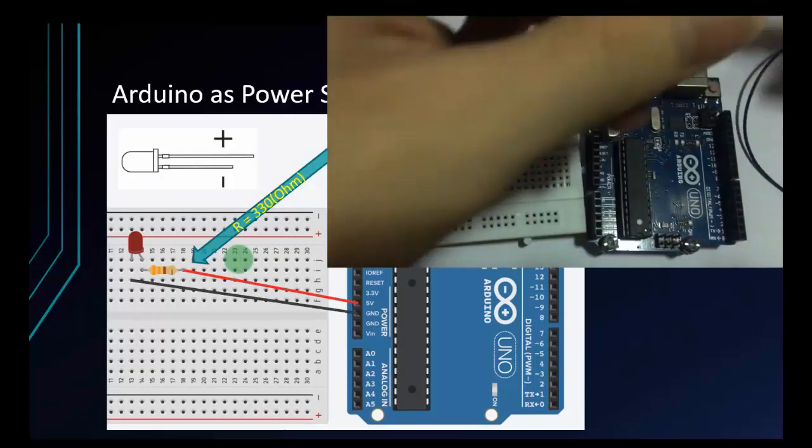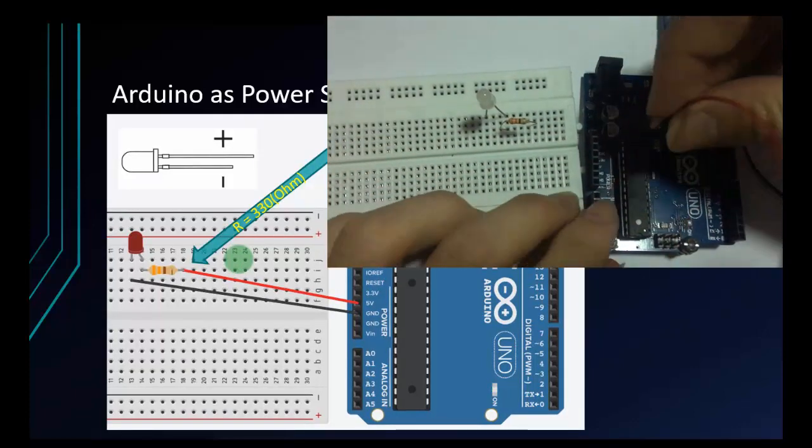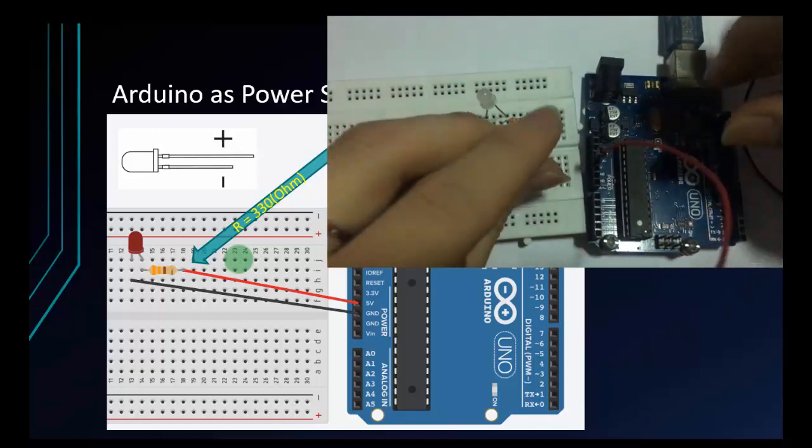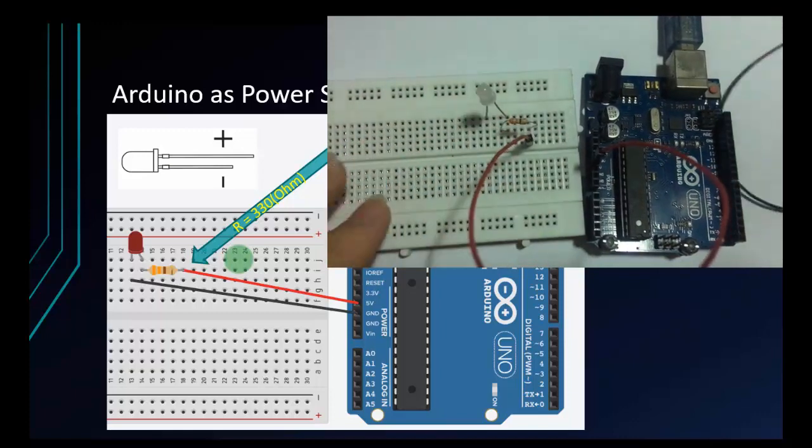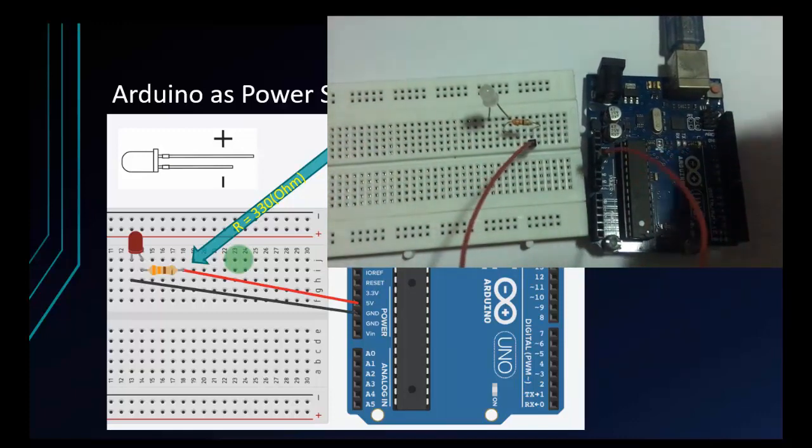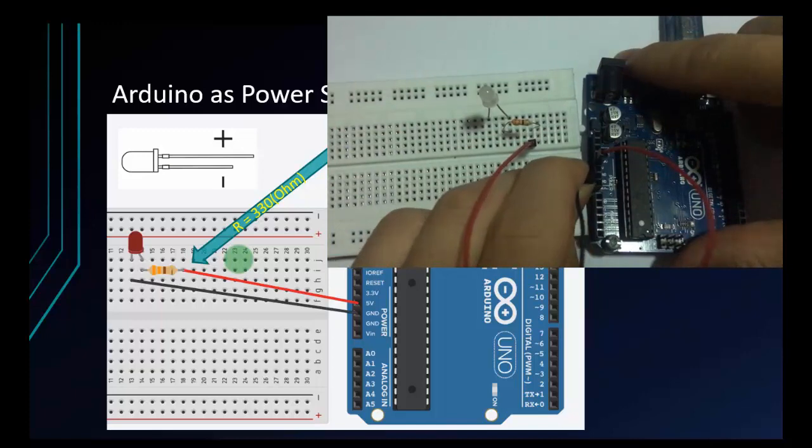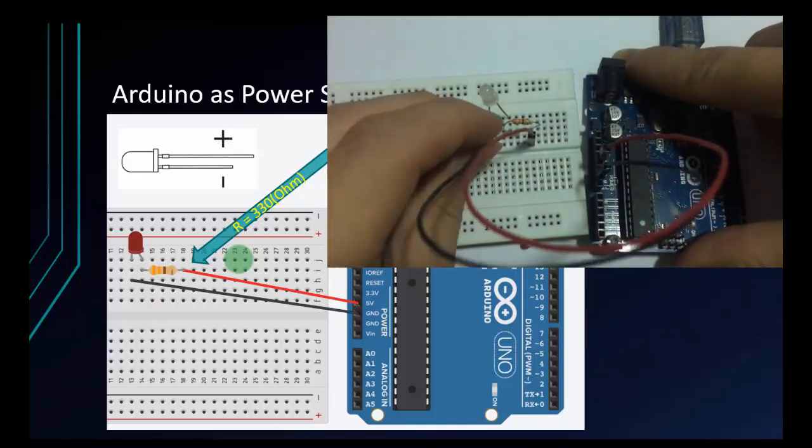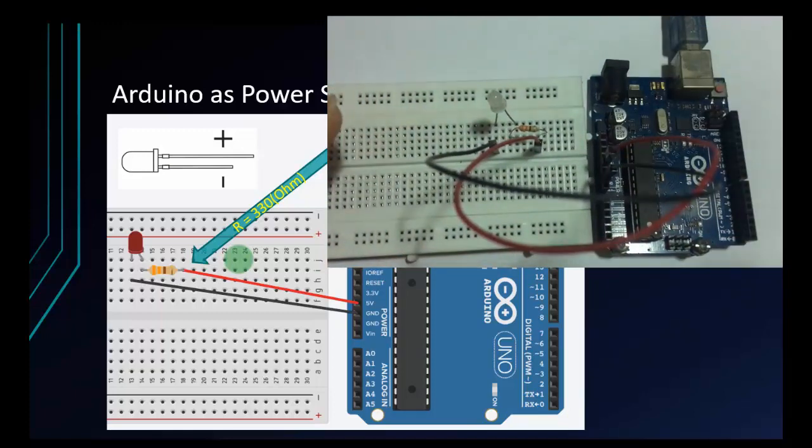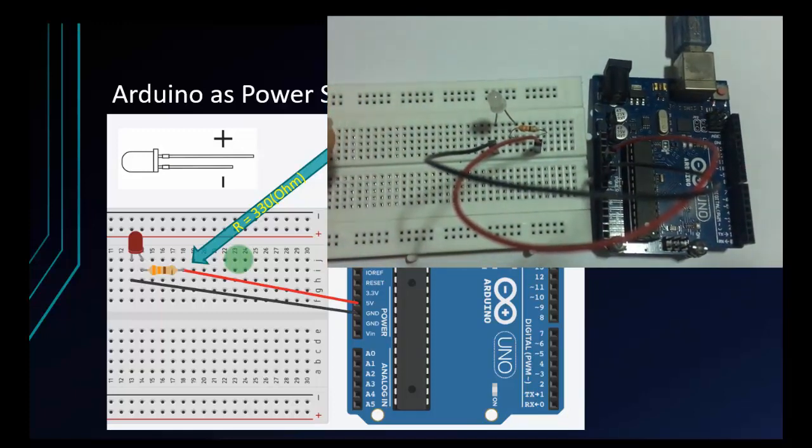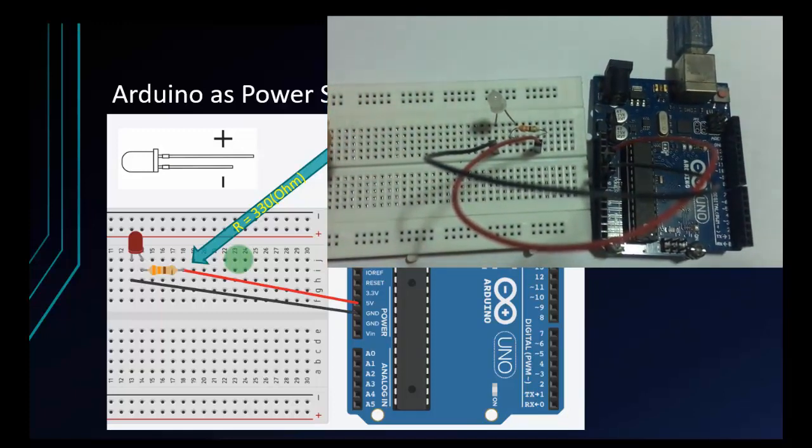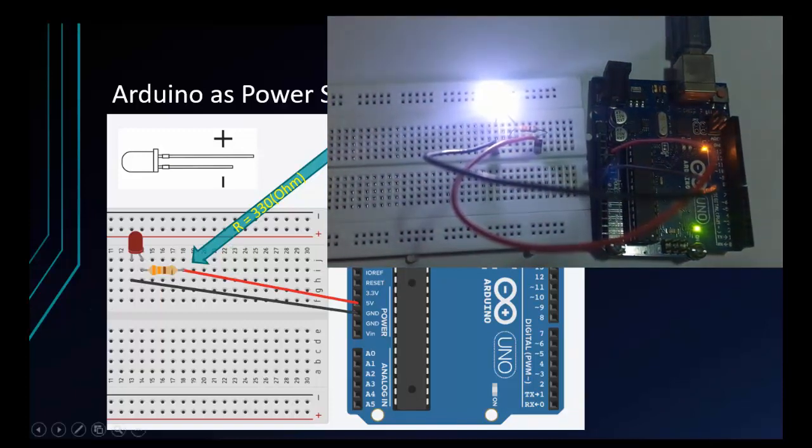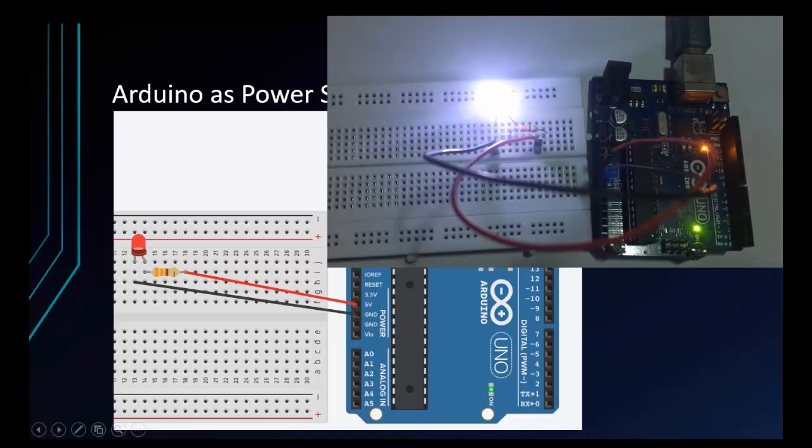And then we will supply the voltage for Arduino and see what happens. Watch the video. I will use the red wire for 5V, connect to the resistor. I will use the black wire for GND, connect to the LED. Now I will connect my Arduino to the laptop. The LED is turned on.